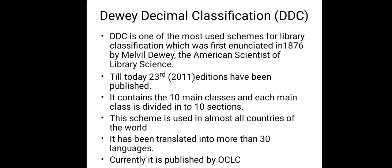Dewey Decimal Classification, DDC. DDC is one of the most used schemes for classification, which was first published in 1876 by Melvil Dewey, the American scientist of library science. Till today, the 23rd edition, in the year 2011, has been published. It contains 10 main classes and each main class is divided into 10 sections. This scheme is used in almost all countries of the world and has been translated into more than 30 languages. Currently, it is published by OCLC.